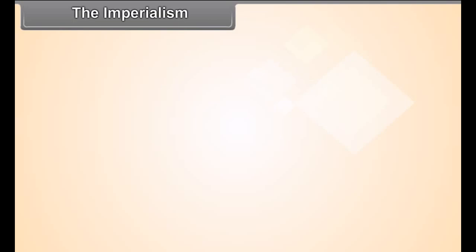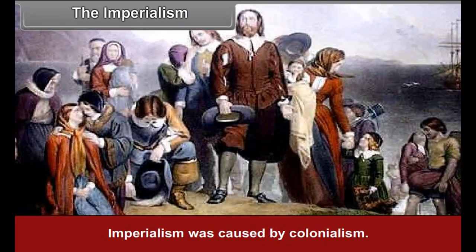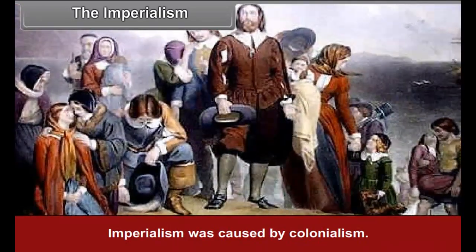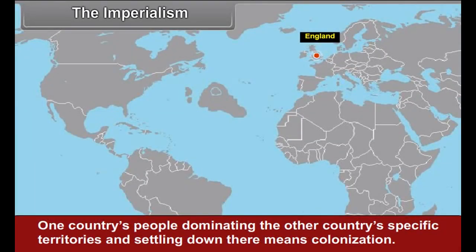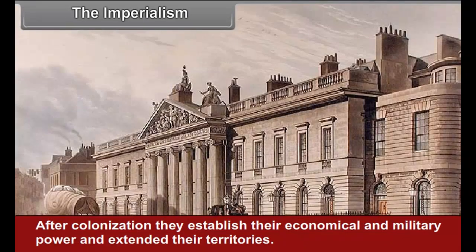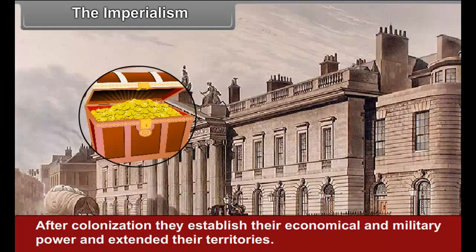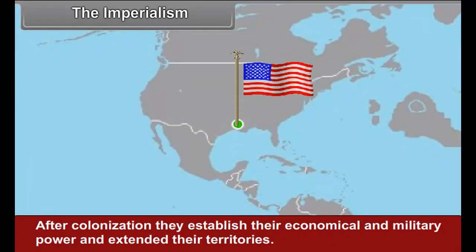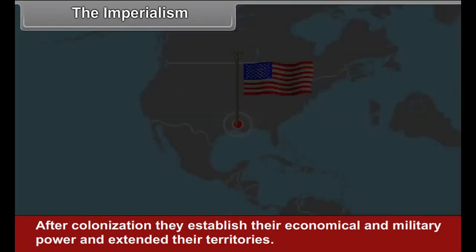Imperialism was caused by colonialism. One country's people dominating another country's specific territories and settling down there means colonization. After colonization, they established their economic and military power and extended their territories. The European nations imposed their imperial means on the Asian and African nations.